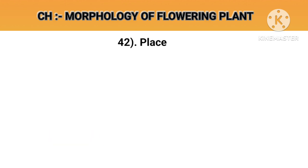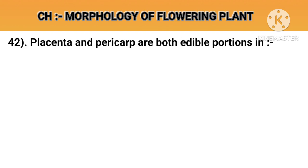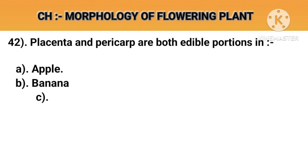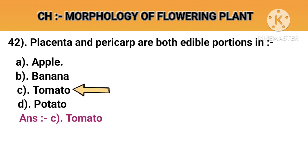Question number 42. Placenta and pericarp are both edible portions in. Option A: Apple. Option B: Banana. Option C: Tomato. Option D: Potato. Answer C: Tomato.